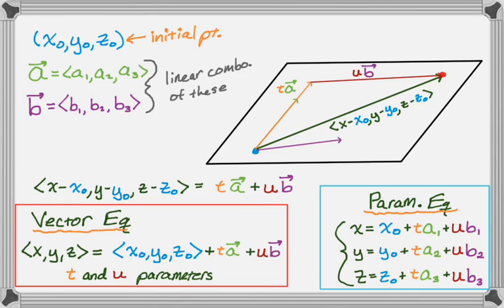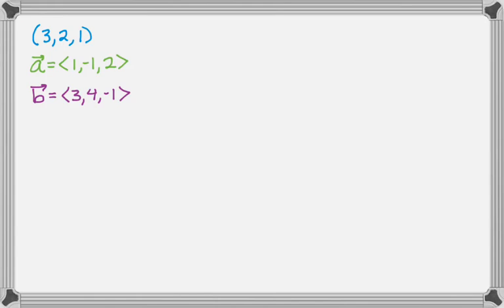So this is kind of two new ways of writing the equation of a plane. So hopefully you already know the Cartesian way, where you end up with something that looks like a linear equation. So let's take a look at an example.